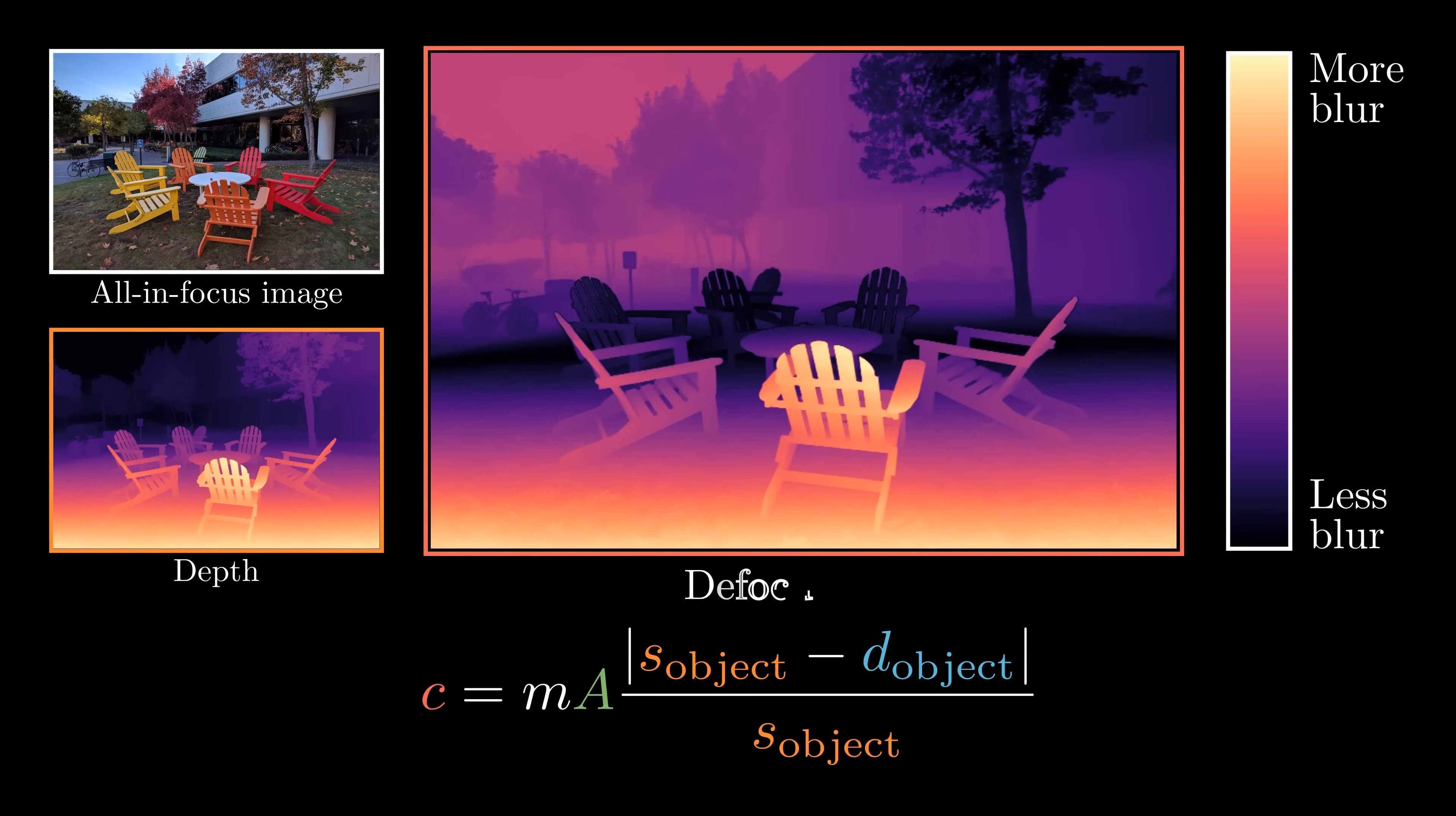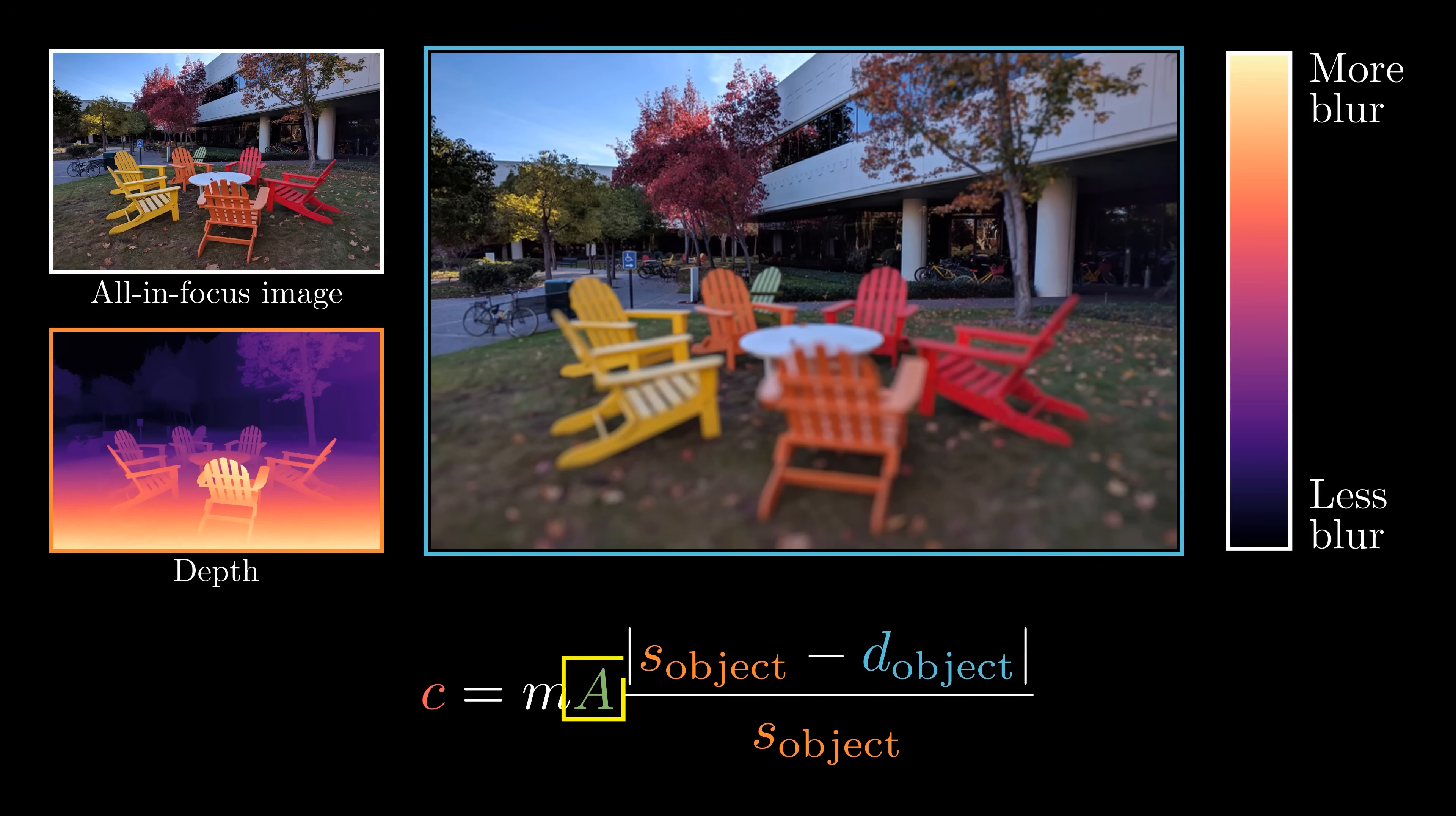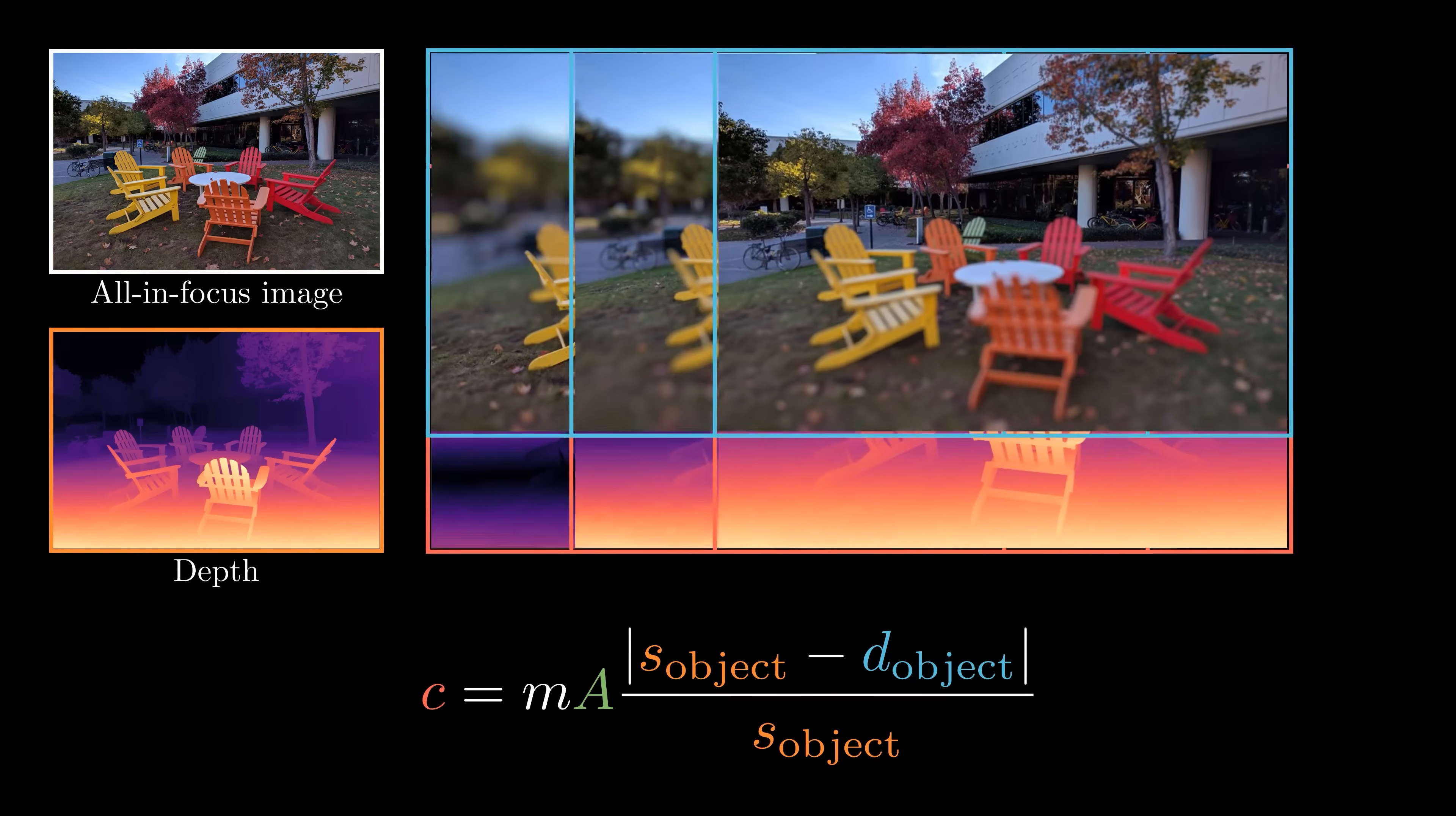We can move the focus plane to the middle and synthesize a refocus image. Here is another defocus map example where we focus on the trees in the back. By increasing the aperture size, we can increase the amount of the focus blur. With this simulated data, we can train our refocusing model.